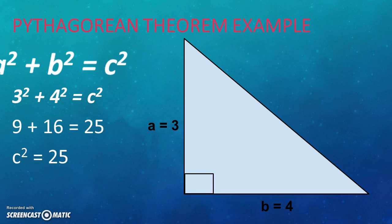C squared equals twenty-five, which comes out to five. It is also proved that hypotenuse is the longest side of the right triangle in this example.